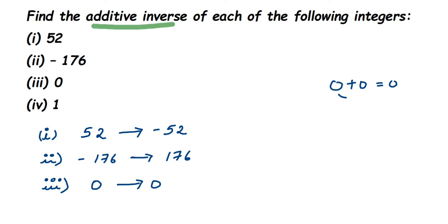Then the next one we have one. So what is additive inverse of one? One is a positive number, so its additive inverse will be minus one. So that's it, I hope this question is clear.